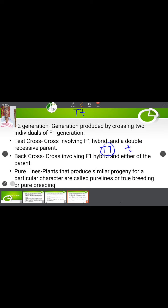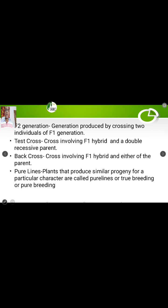The last term is pure lines, also called true breeding or pure breeding. Plants that produce similar progeny for a particular character, generation after generation, are called pure lines. The same character-bearing individuals are produced from the parents consistently. These are some of the important terms you will come across in 12th standard genetics.